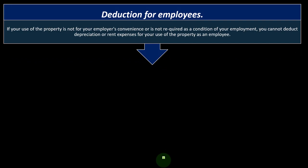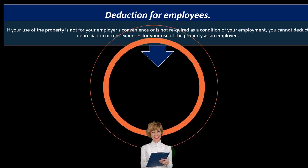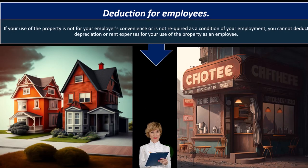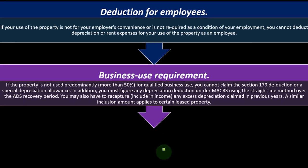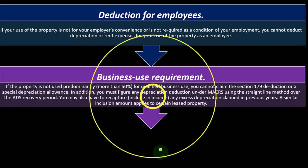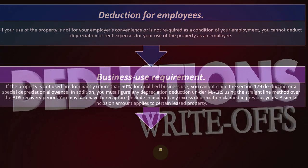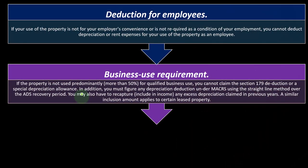Deduction for employees: if your use of the property is not for your employer's convenience or is not required as a condition of your employment, you cannot deduct depreciation or rent expense for your use of the property as an employee. The general rule is that the employer is usually the one expected to take care of such expenses. Business use requirements: if the property is not used predominantly — more than 50% — for qualified business use, you cannot claim the Section 179 deduction or a special depreciation allowance. Those are the two big added depreciations, often allowing you to take the full expense in the year you put the asset on the books.